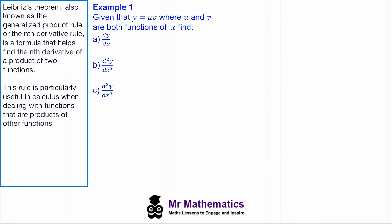Rather than giving you the rule, I'm going to show you where it comes from. If we're given that y equals uv, where u and v are both functions of x, we've been asked to find dy/dx, which we can do by applying the product rule to y equals uv. So dy/dx equals u multiplied by dv/dx, plus v times du/dx. So that's the first derivative.